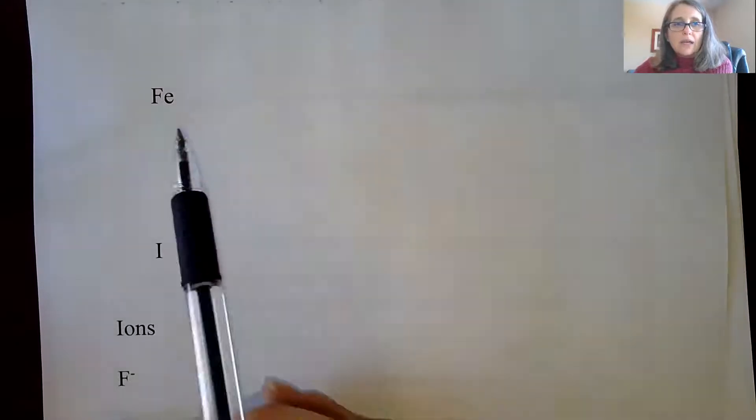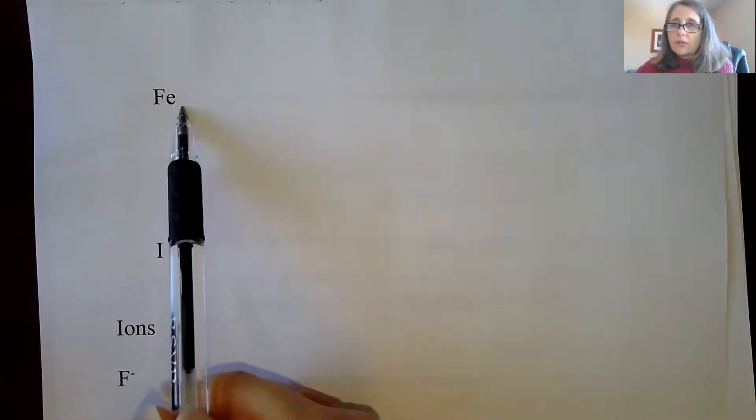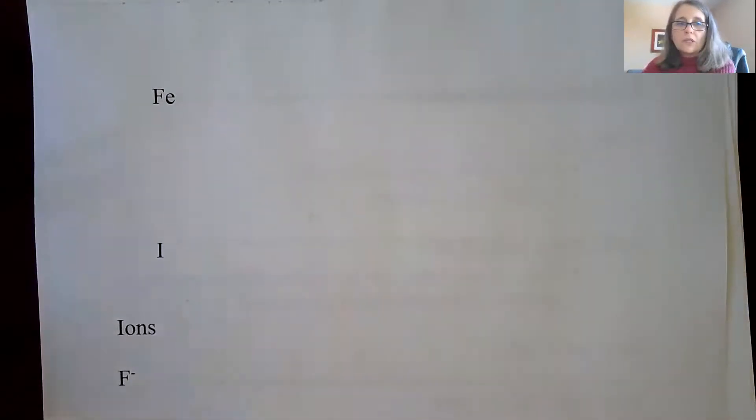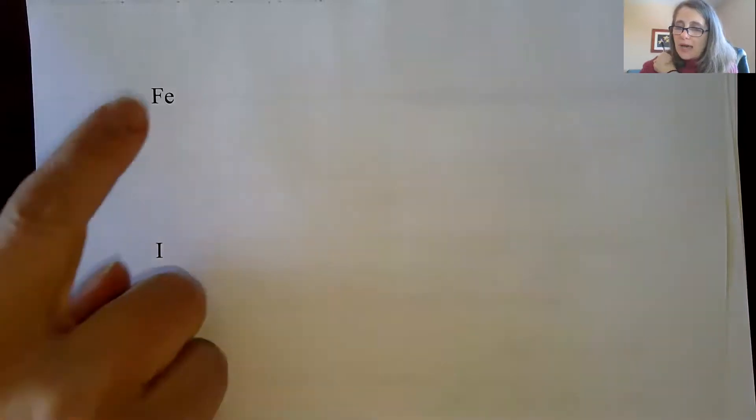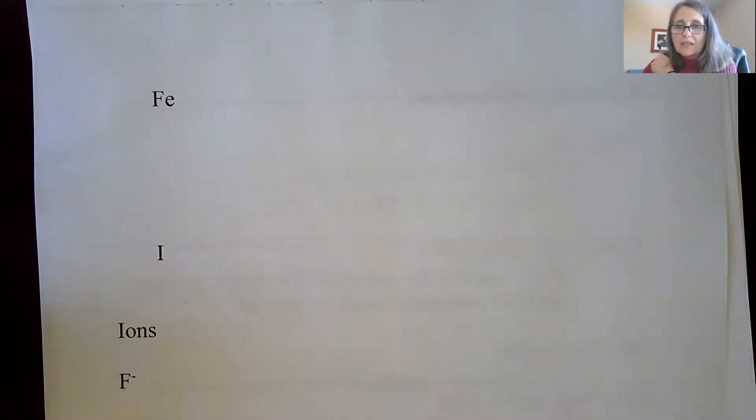So see if you could write iron's electron configuration with noble gas and then see if you could do iodide. So I'm going to pause the video and when I start the video back up, you're going to see the answer. So again, try Fe and then see if you could write its noble gas configuration.